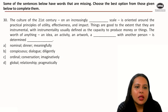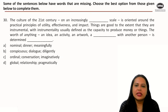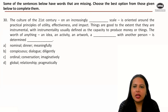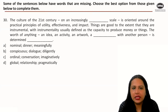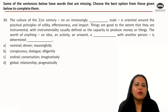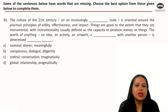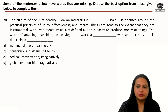Question two: 'The culture of the 21st century on an increasingly dash scale is oriented around the practical principles of utility, effectiveness and impact. Things are good to the extent that they are instrumental — with instrumentality usually defined as the capacity to produce money or things. The worth of anything — an idea, an activity, an artwork, a conversation or a relationship with another person — is determined dash.'